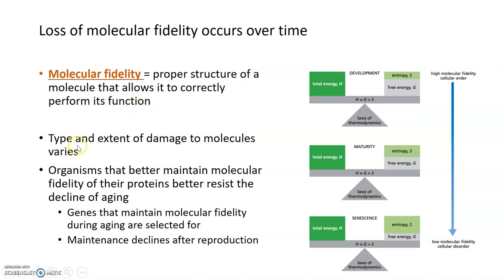The types and extent of damage to different biomolecules, including proteins, varies. It varies over time and between cells. That's part of that idea of randomness in the system. We can't necessarily predict what type of damage will occur to a biomolecule, or how damaged that biomolecule will become, because this is variable between organisms and cells.